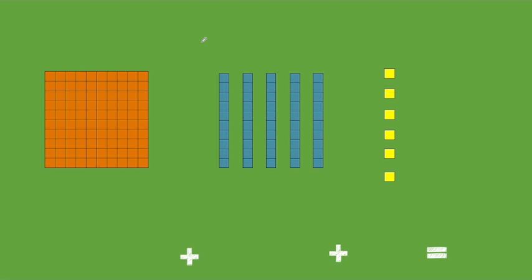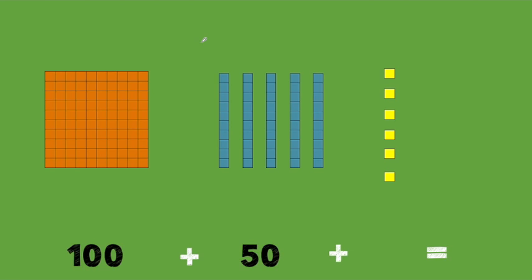How many blocks do you see here? How many in the hundreds place? 1, so 100. How many in the tens place? 5, so 50. How many in the ones place? 6. So our total should be 156. Yes.